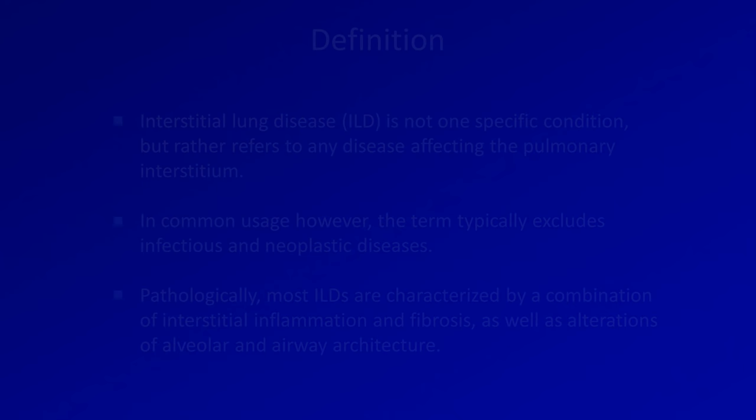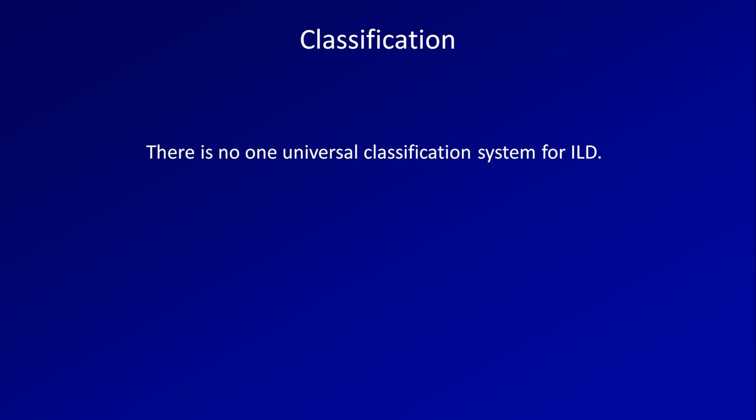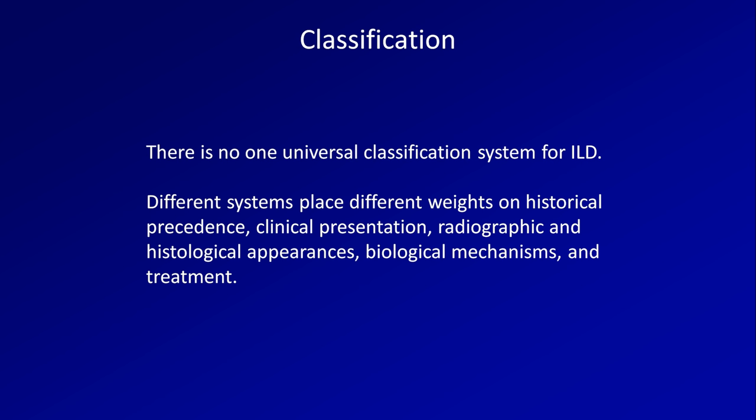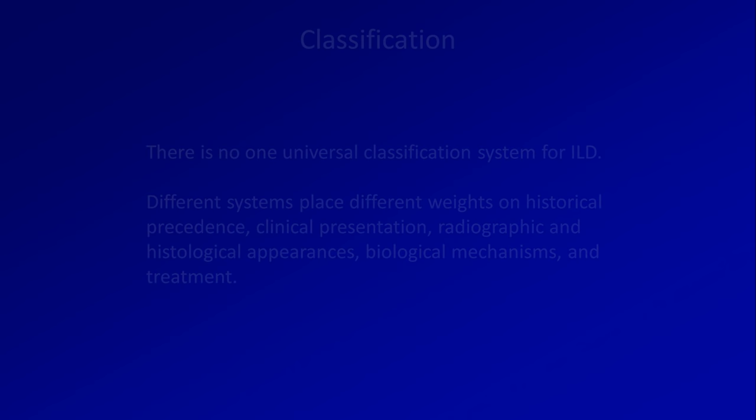If you've tried to study and understand ILDs before and have been frustrated by them, you are not alone. This is a frustrating topic, partially due to lots of acronyms and constantly evolving terminology. The lack of a universal and logical classification system doesn't help. Different systems place different weights on historical precedence, clinical presentation, radiographic and histological appearances, biological mechanisms, and treatment. What I'm going to show is my preferred way to classify these diseases, which may not be the most common way that pulmonologists and pathologists classify them, but which makes more sense to me as a more general clinician.